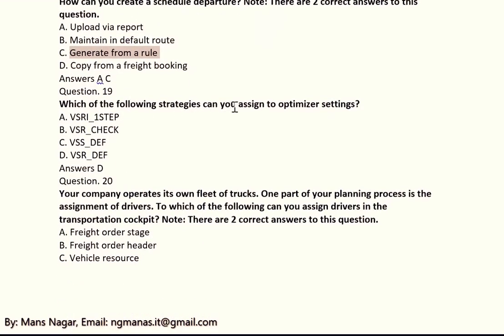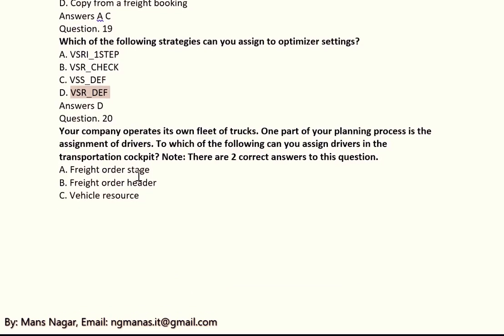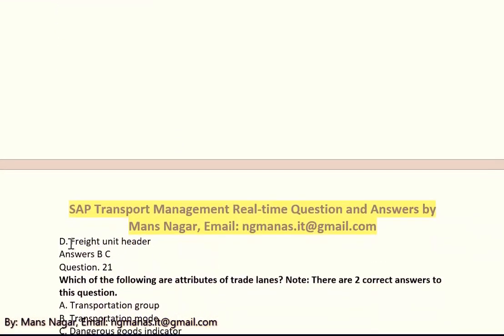Which of the following strategies can you assign to optimizer settings? The options are D, D, D, D, SR, D, E, F. Your company operates its own fleet. Part of your planning process is the assignment of drivers. From which of the following can you assign a driver in the transportation cockpit? The correct answers are B and C — B is freight order header, C means vehicle resource.